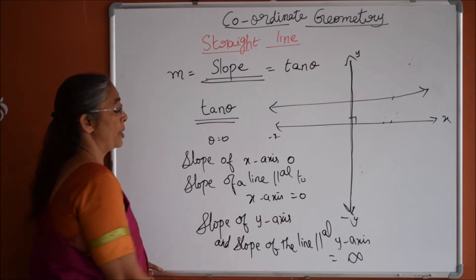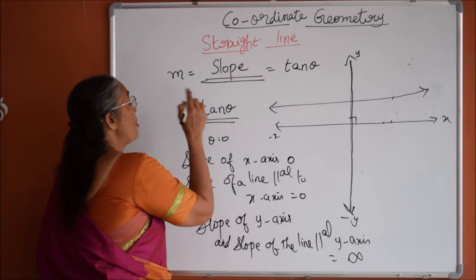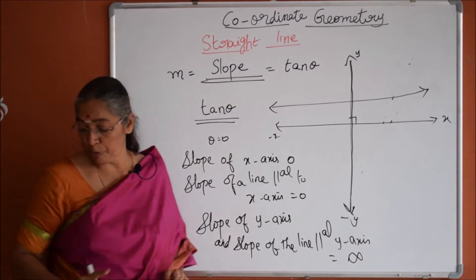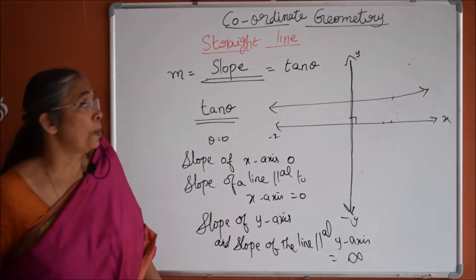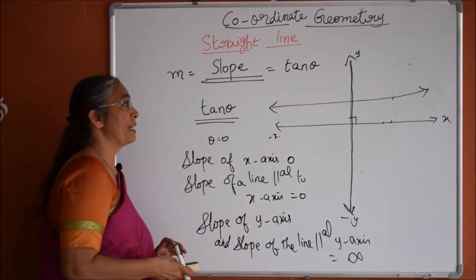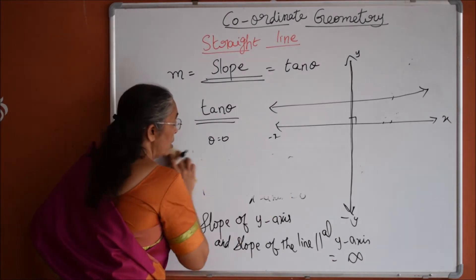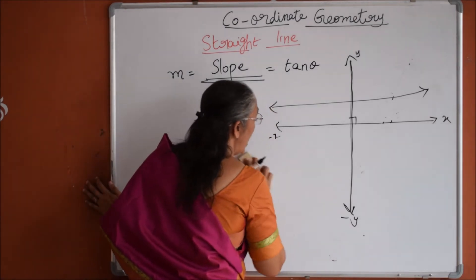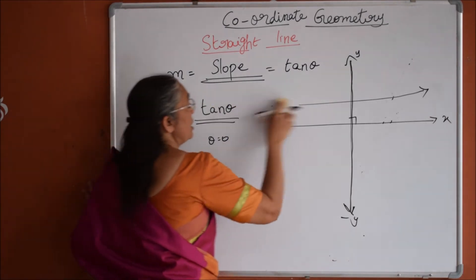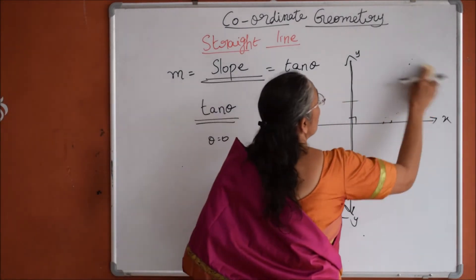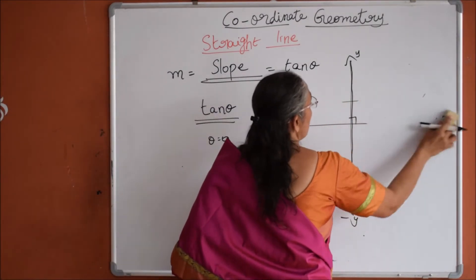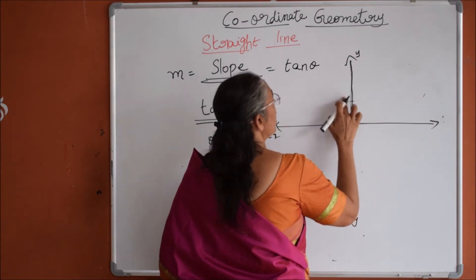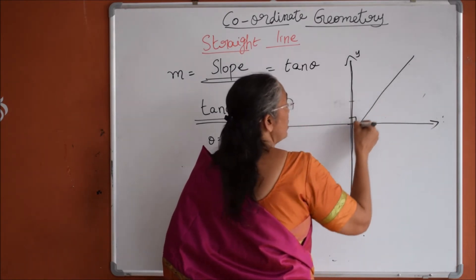So tan theta is the slope — that is one form. Now as an example, when the angle is given, we can find the slope directly as tan theta. Now instead of an angle, suppose two points are given on a line joining them. Two points on the line are given, and the angle is not specified.